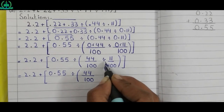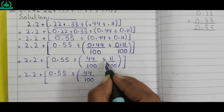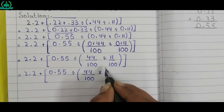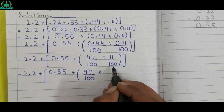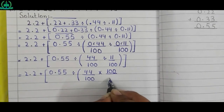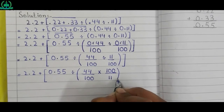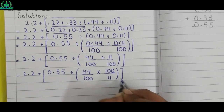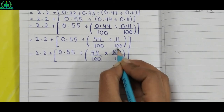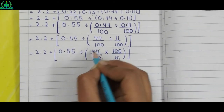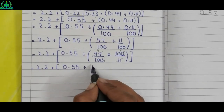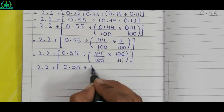We cannot solve with divide sign, so we change divide sign to multiply sign. When we change divide sign to multiply sign, the value of the right side gets reciprocal: 100 upon 11. Hundred once a hundred, hundred once a hundred, eleven once eleven, eleven fours of 44. Remaining part of the question as it is: four.